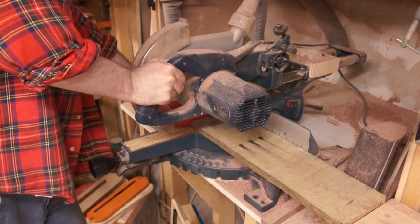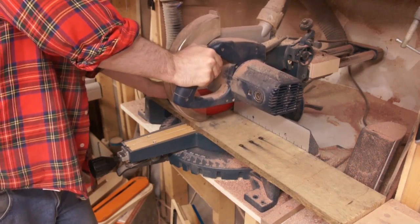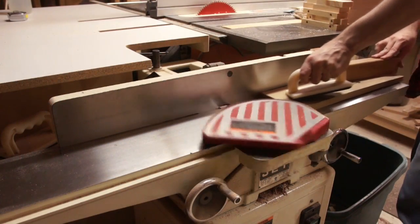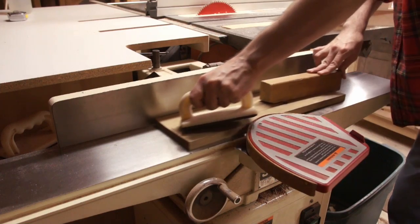I jointed the back edge of the pallet boards. And I wasn't going for a totally flat surface, I just wanted something that wouldn't rock in the CNC and would sit flat on the wall.